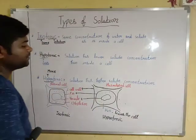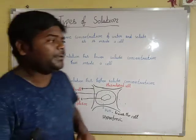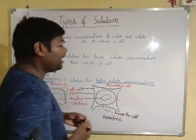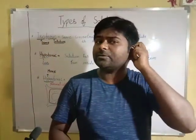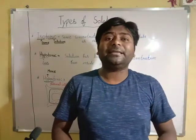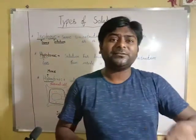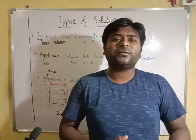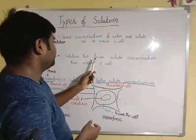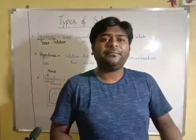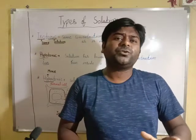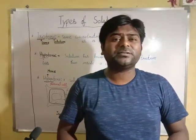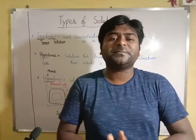Hypertonic solution: hyper means more and tonic means solution. So solute concentration is higher. When we have higher solute concentration, obviously solvent becomes less. For example, adding one spoon of sugar into water gives a hypotonic solution — less solute. But when we add six or seven spoons, the solute is becoming more and the solvent is becoming less, making the solution concentrated.